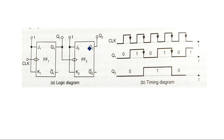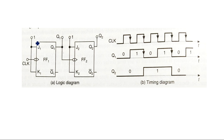Now let us see the circuit diagram — the logic diagram of this particular ripple up counter. In asynchronous counter, the output of the first flip-flop is given as the clock input to the second flip-flop. If there is a third flip-flop, Q2 will be given as the clock signal for the next flip-flop, and so on. JK flip-flops are preferred for counter design; JK must be short-circuited and connected to logic 1. The clock signal is given with negative edge triggering, and the output of the first flip-flop is given as the input clock signal for the second flip-flop.